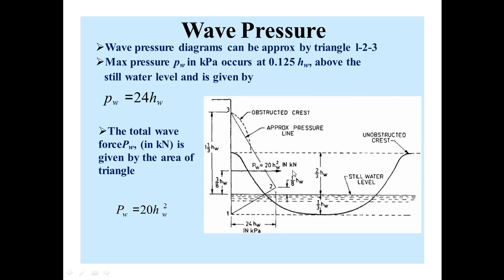The total pressure will be at the centroid and is equal to 20Hw² in kilonewton. Or the total force Pw is equal to 20Hw² in kilonewton. The total wave force Pw in kilonewton is given by the area of the triangle, and is equal to Pw = 20Hw². This Pw equal to 24Hw will act at this point and is equal to 1/8 Hw. This is the total, the first Pw at this point, at this point the total maximum pressure or wave pressure at this point will be equal to 24Hw above the still water level. And this is the end of today's lecture.